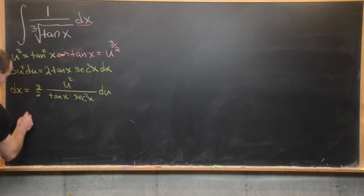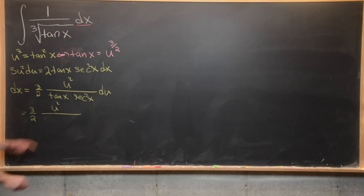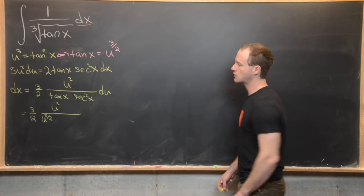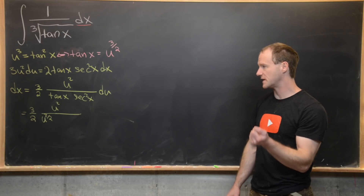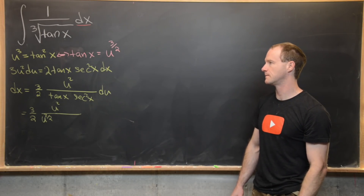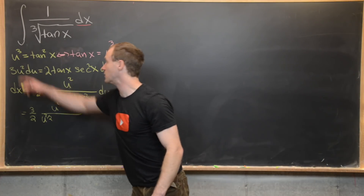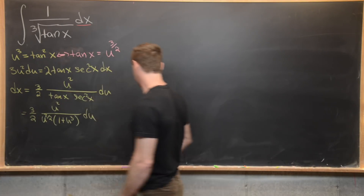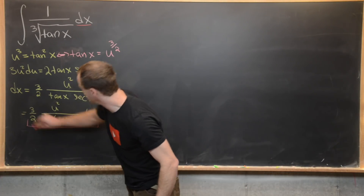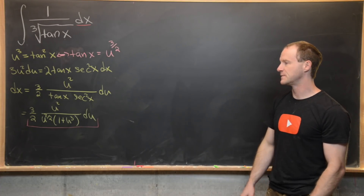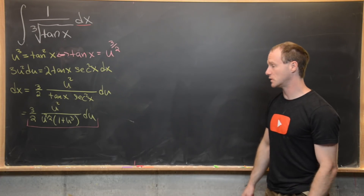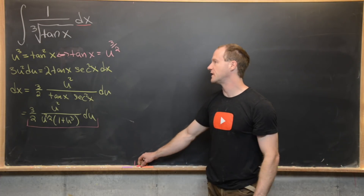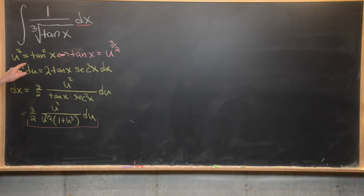We'll have dx equals three halves, then a big fraction with u squared in the numerator, tangent x and secant squared of x in the denominator, and then du. Now we substitute: tangent of x is u to the three halves. And for secant squared, recall that secant squared equals 1 plus tangent squared, which is 1 plus u cubed. So we write this as 1 plus u cubed du. We can now substitute all of this in everywhere we see a dx, turning this integral from all x's into all u's.